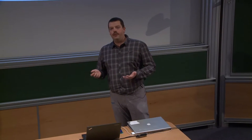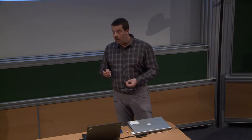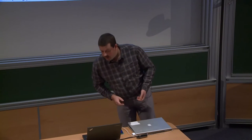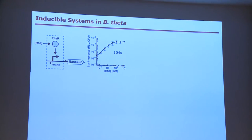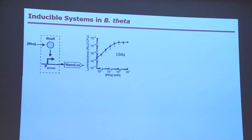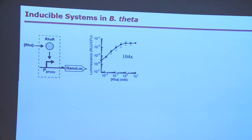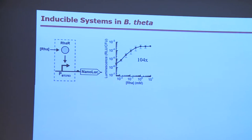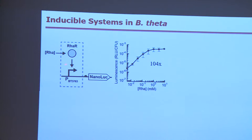Constitutive expression is still fairly limiting — many circuit constructs require turning things on and off on demand. So we wondered how we could obtain inducible systems. B. thetaiotaomicron has an extremely varied array of carbon source usability; it can degrade many more carbon sources than E. coli. Just like E. coli, it senses them and induces degradation genes only when the carbon source is present, providing a large array of systems that can be borrowed from the genome for sensing carbon sources.